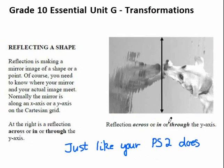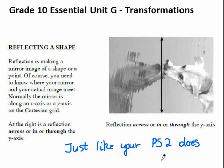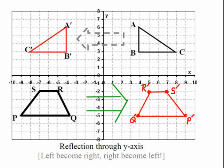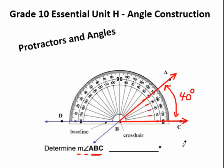Unit G is transformations — reflecting a shape across a line, rotating and sliding shapes, just like your PlayStation does. We'll be using Cartesian coordinates — remember doing X and Y on grid paper? A shape reflects over to the other side. Unit H is protractors — we'll learn how to use protractors and make angles. It's just like using a ruler: you start at 0, and count up — 10, 20, 30, 40 — so that'll be a 40-degree angle. And of course the supplement of that would be 140 degrees.